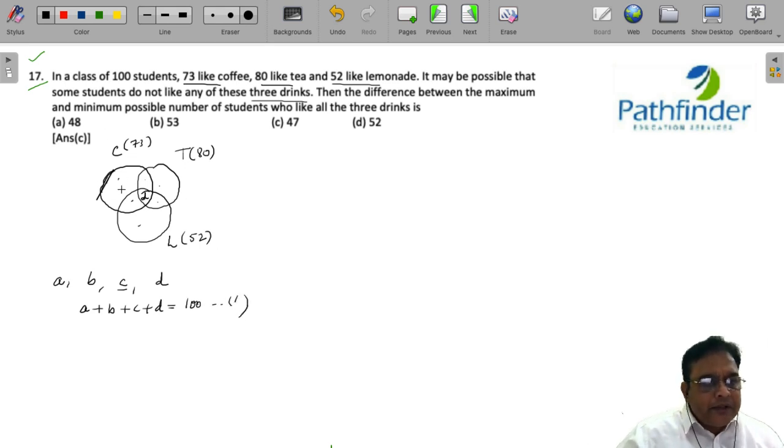Now, looking at this Venn diagram, I can say that B plus 2 times C plus 3 times D must be equal to 73 plus 80 plus 52. That makes it 205. Just subtract equation 1 from equation 2, and you will get C plus 2D minus A is equal to 105.